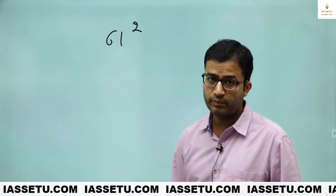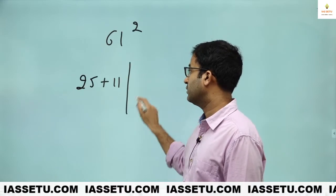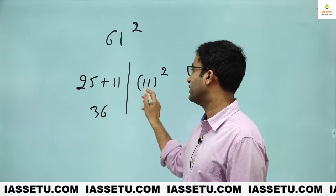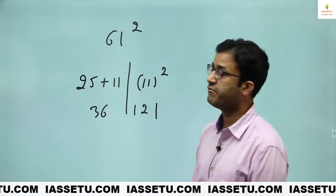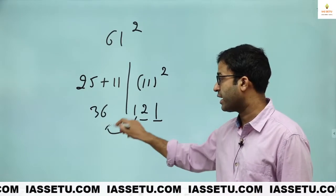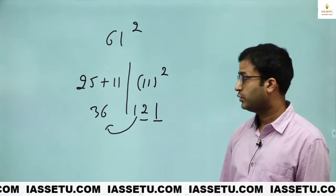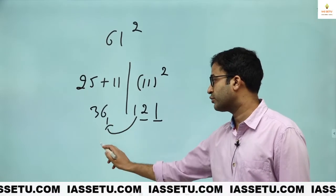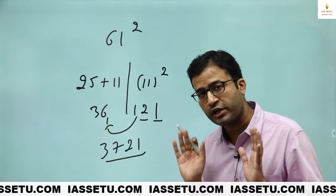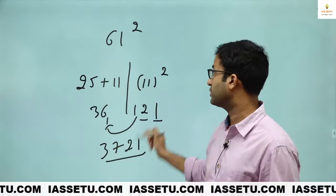61 square. Plus 11. So 25 plus 11. This side, 11 square. So this is 36. This is 121. This is unit place. This is 10 place. This one you have to carry forward. Because it is 100 place. So here you have to add 1 here. So it becomes 3721. Right hand side, we have to take unit and 10 place. If we have extra, we have to carry forward. So this is the answer.